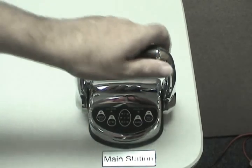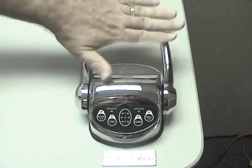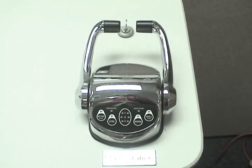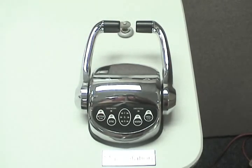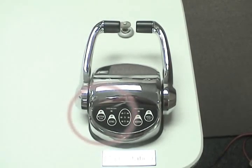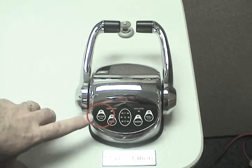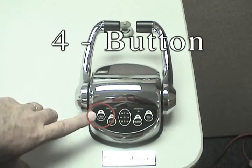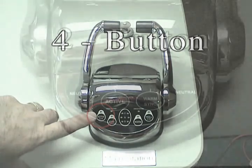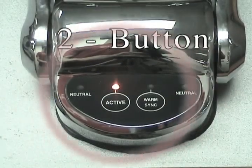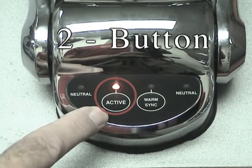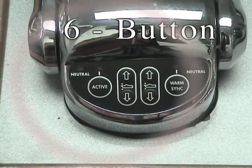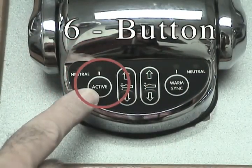Step 2: Move both control handles to the full ahead position. Step 3: Turn the control system power on. You will observe that the take or active station LEDs begin to flash slowly. Here you can see the same procedure using a two-button control head, and here using an integrated trim control head or a six-button control head.